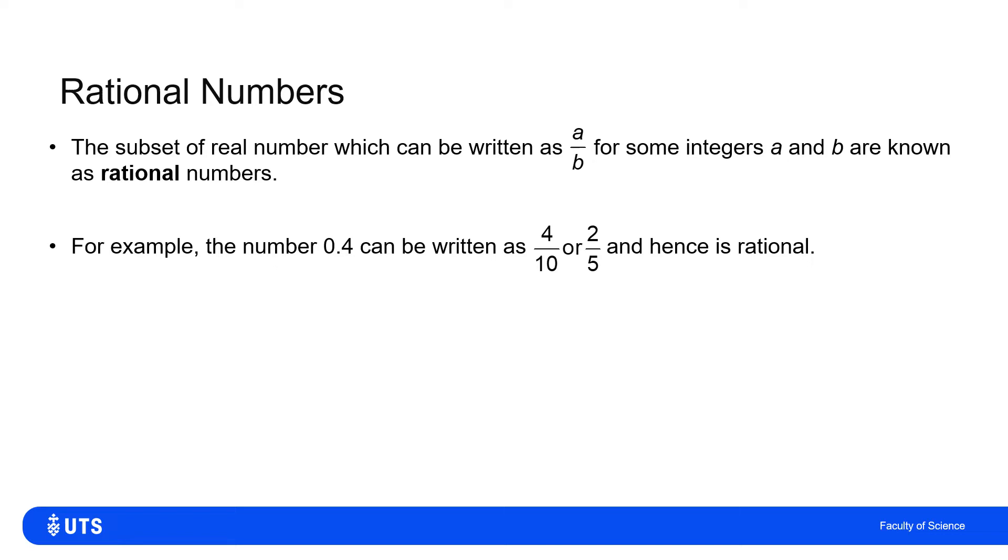So for example, 0.4 would be rational. I could write this as 4 tenths, 2 fifths, 41 hundredths. There's not necessarily a unique way of writing them, but it can be written in this form.